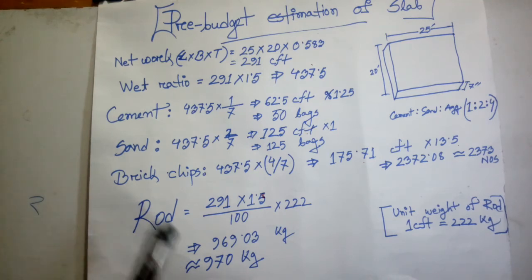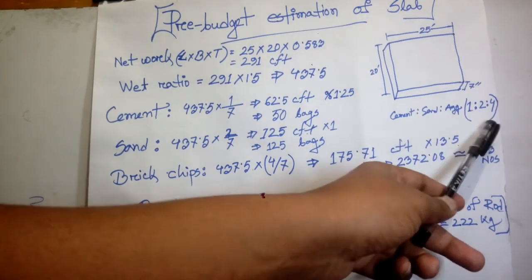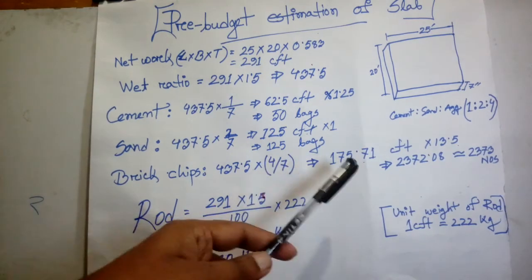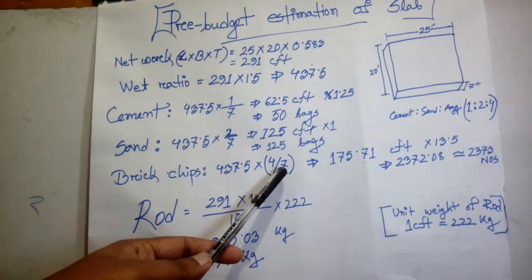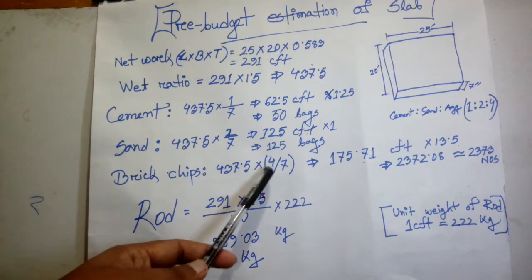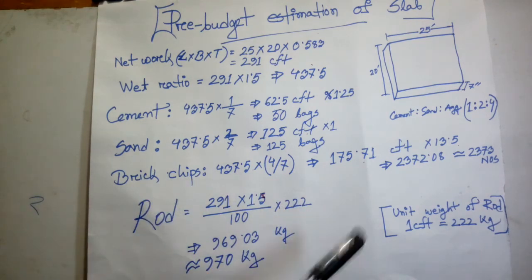For brick chips, we should have 37.5 into 4 by 7. That means the aggregate ratio unit is 4 here. The ratio to follow is 7. So 37.5 into 4 by 7 gives us 175.71 CFT for brick chips. One CFT is equal to 3.5 T8.